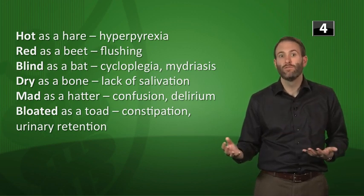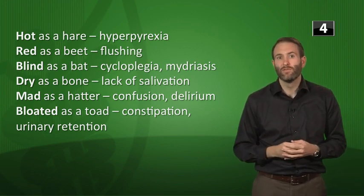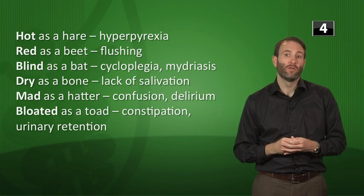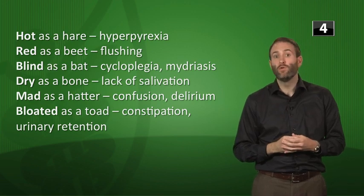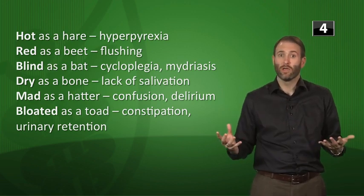Mad as a hatter: acetylcholine is an important neurotransmitter in the brain as well as the periphery, so you can see delirium when you inhibit it. Bloated as a toad refers to constipation and urinary retention — you're slowing all digestion down. Another symptom that doesn't fit into the mnemonic is tachycardia: the vagus nerve, the major parasympathetic nerve in the body, helps slow down the heart, so if you inhibit it, you may get tachycardia.